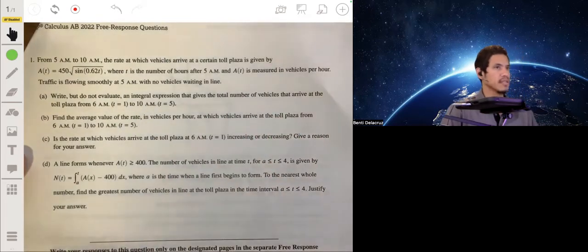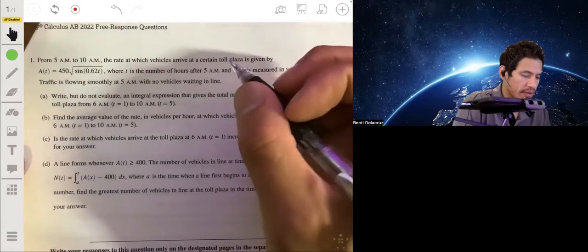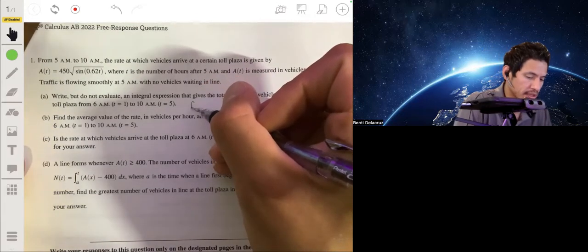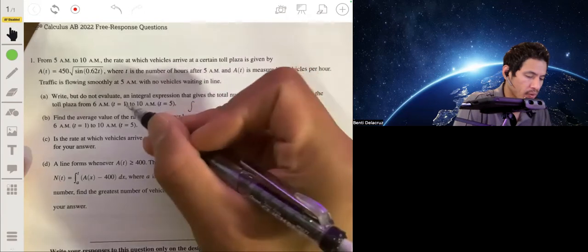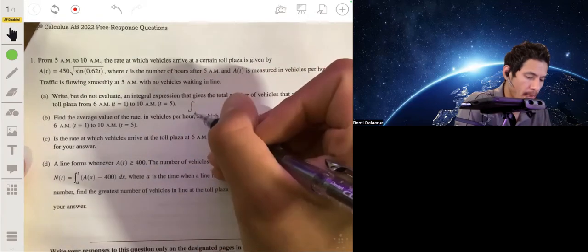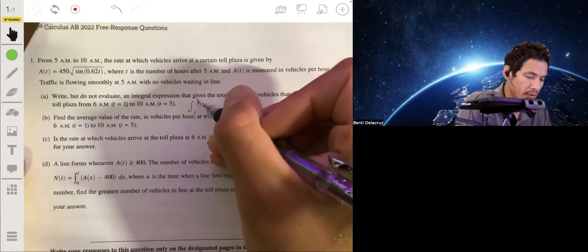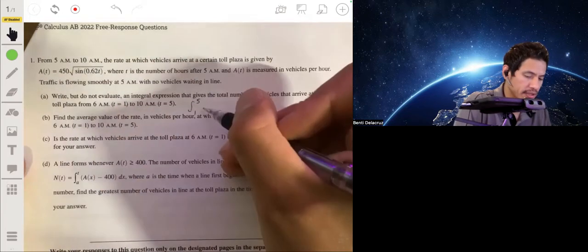Okay, so this is pretty simple, actually. All you have to do is set up an integral expression that goes from 1 to 5 of A(T) dT.